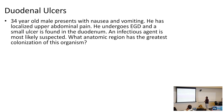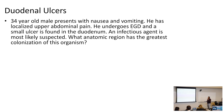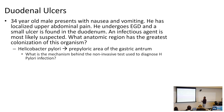A 34-year-old male presents with nausea, vomiting, and localized upper abdominal pain. He undergoes EGD and a small duodenal ulcer is found. An infectious etiology — H. pylori — is suspected. The greatest colonization of H. pylori is in the pre-pyloric area of the stomach.